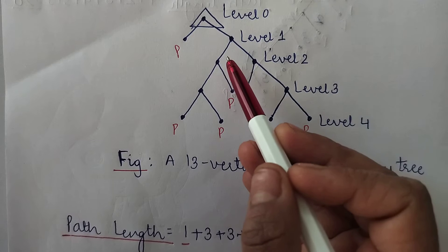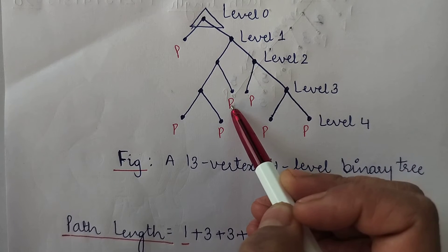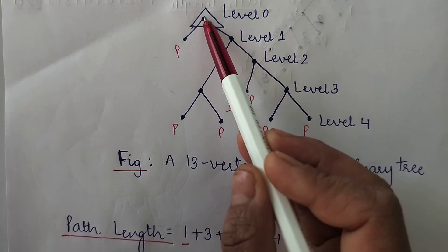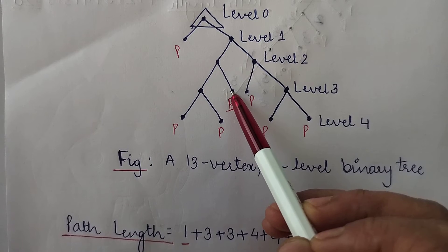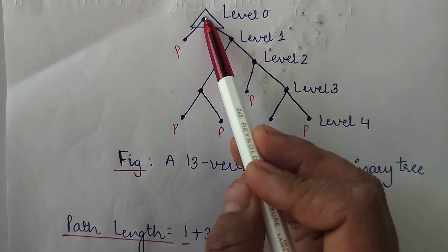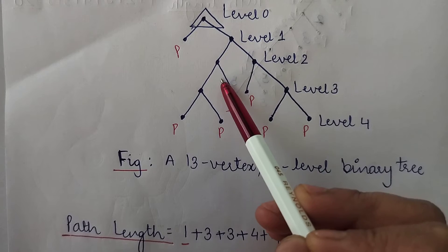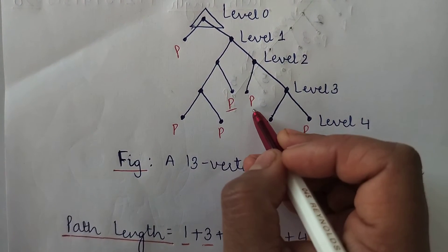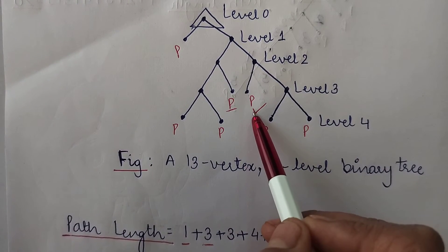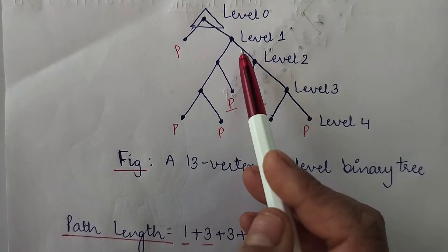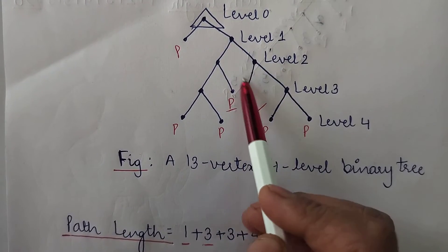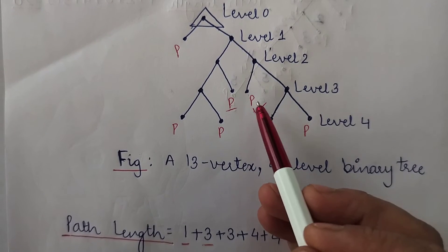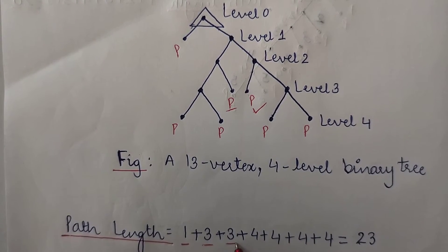For the next pendant vertex, the path length is the number of edges from the root till that vertex — 1, 2, and 3 — so its path length is 3. Similarly, if I consider another pendant vertex, there are also three edges starting from the root till that vertex, so its path length is also 3.